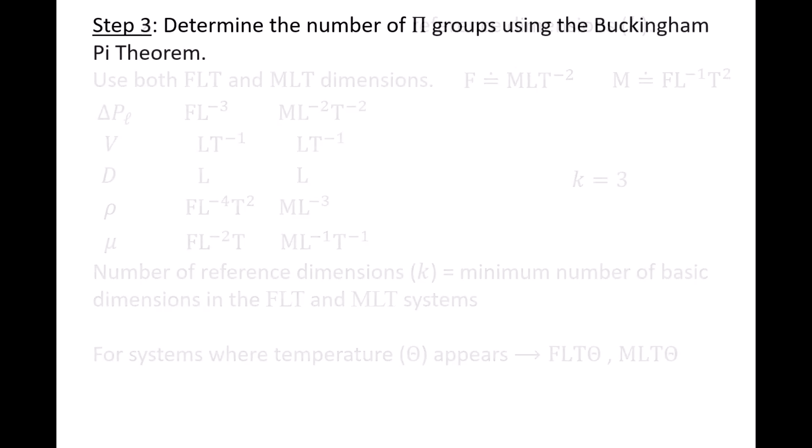Next, we move on to step 3, where we use the Buckingham Pi Theorem to determine the number of dimensionless pi groups that we need to create. Recall that the Buckingham Pi Theorem states that the number of pi groups required to study a problem experimentally is equal to the number of variables n minus the number of reference dimensions k. In our situation, n is 5, k is 3, so 5 minus 3 gives 2 pi groups.